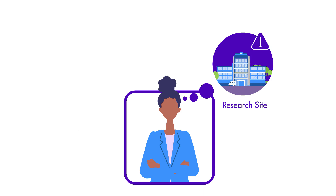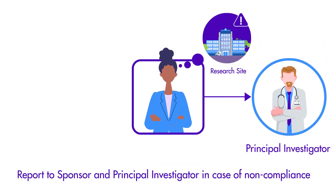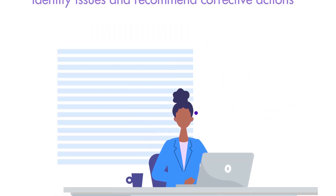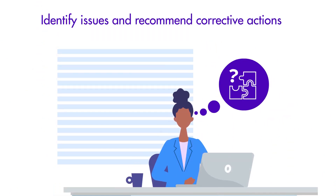Are all adverse events and serious adverse events being reported to the institutional review board or appropriate regulatory bodies on time? If you find that the site is not compliant with a protocol or regulatory requirements, that data is incorrect or incomplete, or that patient safety is at risk in any way, you need to inform the principal investigator at the site about these issues and document and report them to the sponsor. Once you have identified the issues, you need to recommend appropriate corrective actions.